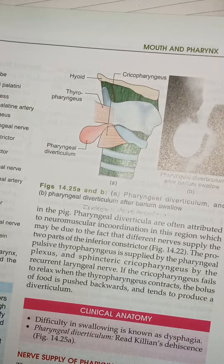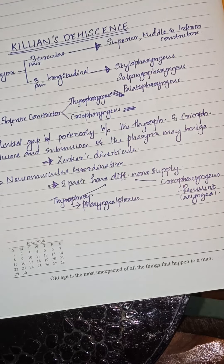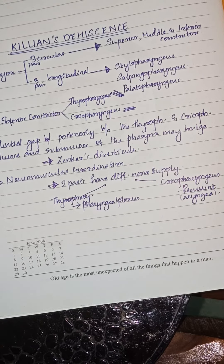Pharyngeal diverticula are often attributed to neuromuscular incoordination in this region. This is because the two parts of the inferior constrictor — the thyropharyngeus and the cricopharyngeus — have different nerve supplies. The propulsive thyropharyngeus is supplied by the pharyngeal plexus, whereas the sphincteric cricopharyngeus is supplied by the recurrent laryngeal nerve. Sometimes if the cricopharyngeus fails to relax when the thyropharyngeus contracts, the bolus of food is pushed backwards, tending to produce this diverticulum.